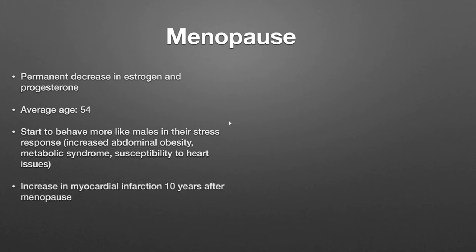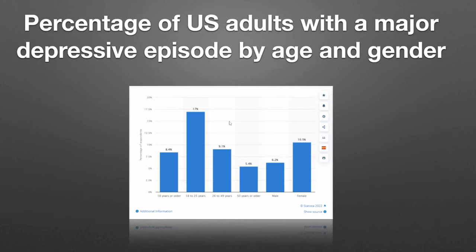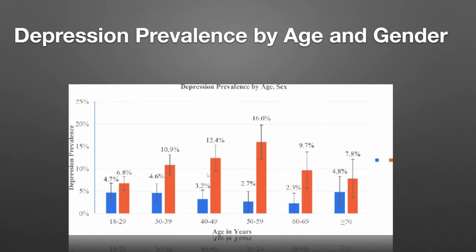Post-menopause, you see that same increase in heart attacks. It is still the number one cause of death in women — heart disease. Jeff Rouse, an airway faculty at Spear, puts it this way: 'young, fit females become fat old dudes.' That's pretty much what happens in menopause. So we know that females are going to have a higher amount of depression and anxiety, but you'll notice it kind of drops down once menopause hits.